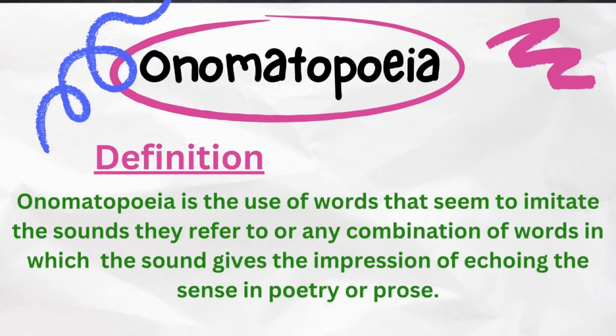Onomatopoeia is the use of words that seem to imitate the sounds they refer to, or any combination of words in which the sound gives the impression of echoing the sense in poetry or prose. یعنی شاعری یا نثر کے اندر کسی لفظ کو اس طرح استعمال کیا جائے کہ اس سے کسی چیز کی آواز ثابت کرنا مقصود ہو، تو اسے onomatopoeia کہتے ہیں۔